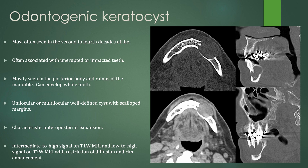Odontogenic keratocysts are most often seen in the second to fourth decades of life. They are also usually associated with unerupted or impacted teeth, but they do not have to be. Mostly seen in the posterior body and ramus of the mandible, and they can envelop the whole tooth within the cyst if large enough. They present as unilocular or multilocular, well-defined cysts with scalloped margins. You can see it pooching out of the cortex of the mandible into the gingival soft tissues. They expand in an anteroposterior dimension as opposed to a transverse dimension. On MRI, these show restricted diffusion — intermediate to high on T1 due to proteinaceous material, and anywhere from low to high on T2 depending on the contents. That restricted diffusion and rim enhancement are characteristic of odontogenic keratocyst.